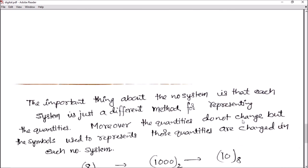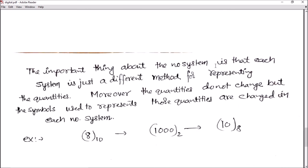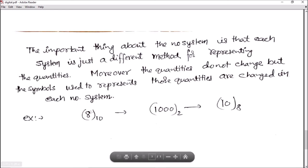Now, apart from this, the important thing about the number system is that each system is just a different method for representing the quantities. Moreover, the quantities do not change, but the symbols used to represent those quantities are changed in each number system. For example, if we have 3 in decimal number system, then we represent it as 3 in decimal.